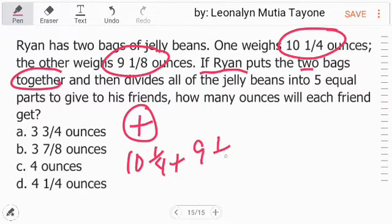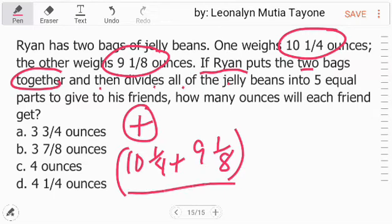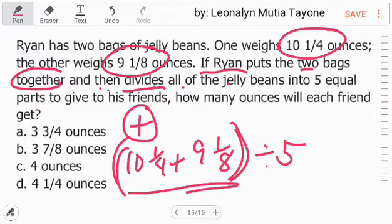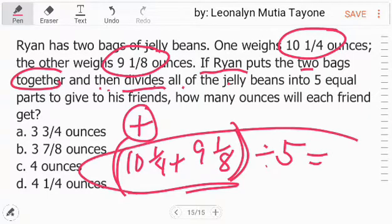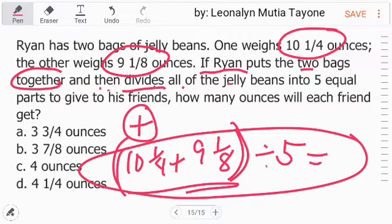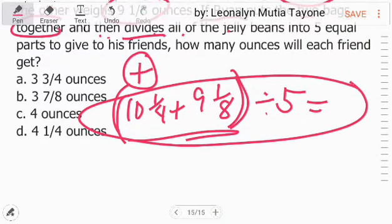9 and 1/8. And then divides all. We'll add them first. Then divide. So we close the parenthesis around the two. Add them first, then divide all the jelly beans into 5 equal parts. Divided by 5. That's the equation. We just solve it and that's the answer.